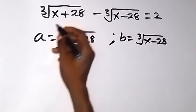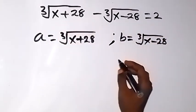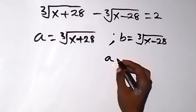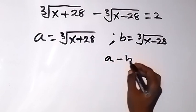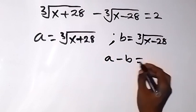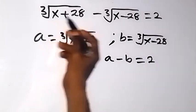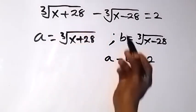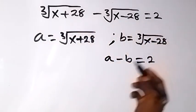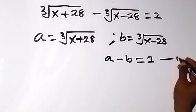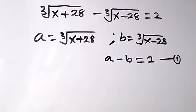Such that what we have can now be simply written as a minus b equals to 2. That is, we have this as a, then this as b. So that's a minus b equals to 2. Let's call that equation 1.